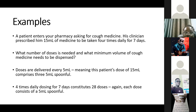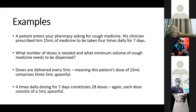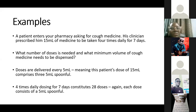Another example: a patient needs 15 mils of cough medicine taken four times daily for seven days. What number of doses is needed and what minimum volume needs to be dispensed? In pediatrics, you often see that the pharmacist gives one bottle and the patient finishes it in three days, thinking the treatment is complete — and these are some of the causes of treatment failure.